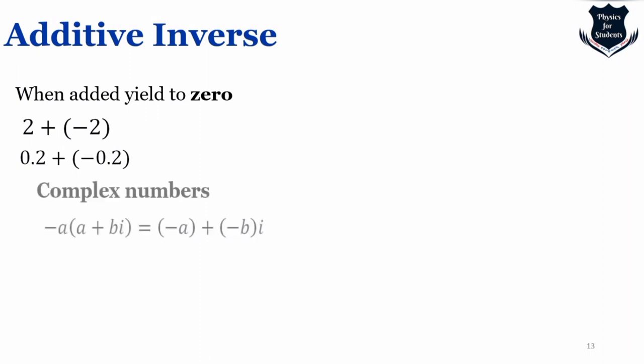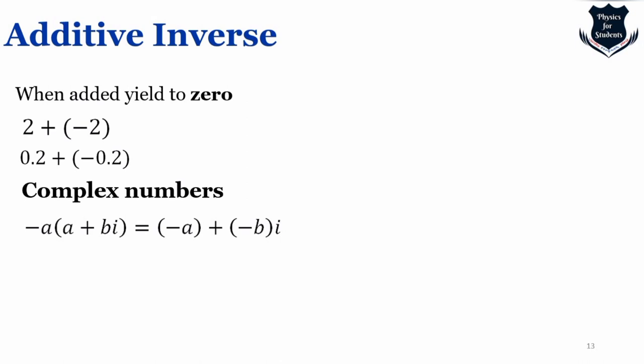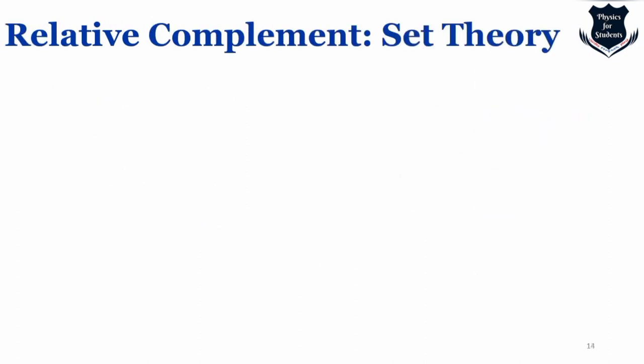We also know what is called an additive inverse — whatever is added with negative 1 yields 0. When we use this in complex numbers, a minus sign such as -A + B, plotted on a complex plane, gives a totally different kind of curvature or figure — showing how the additive inverse and the minus sign can be used in complex numbers on a complex plane.